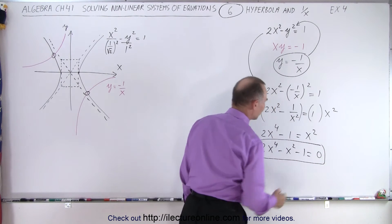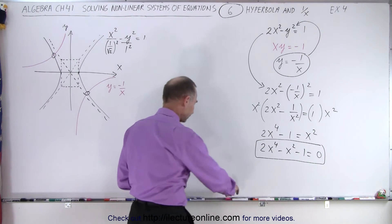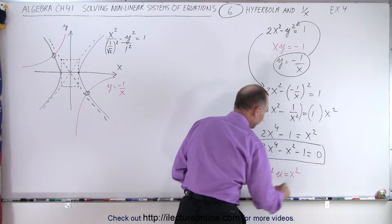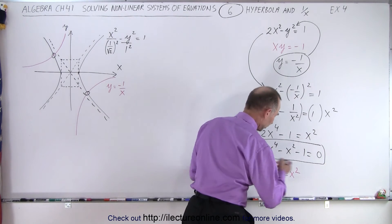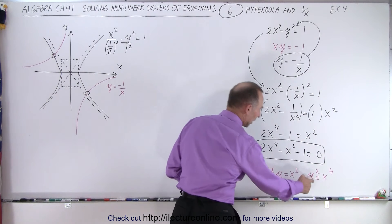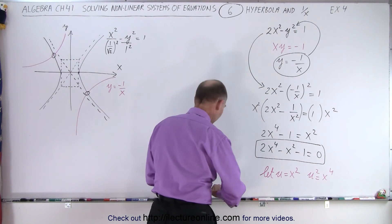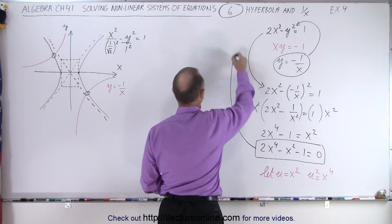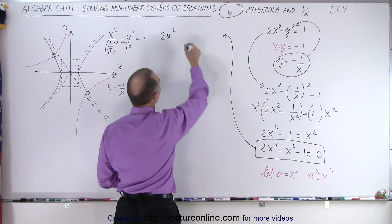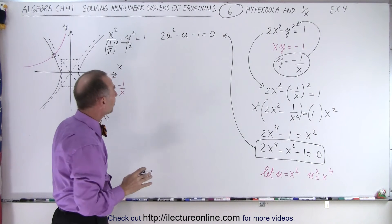So that is the equation we end up with. Now the question is, how do we solve that? Well, we can do that by making a substitution. We're going to let u equal x squared. If we do that, notice that if we square both sides, we get u squared is equal to x to the fourth power. So we replace x to the fourth by u squared and x squared by u, and then we end up with just a quadratic equation, which is a lot easier to solve. We can now write this as 2u squared minus u minus 1 equals 0, and that can probably easily be solved by factoring.